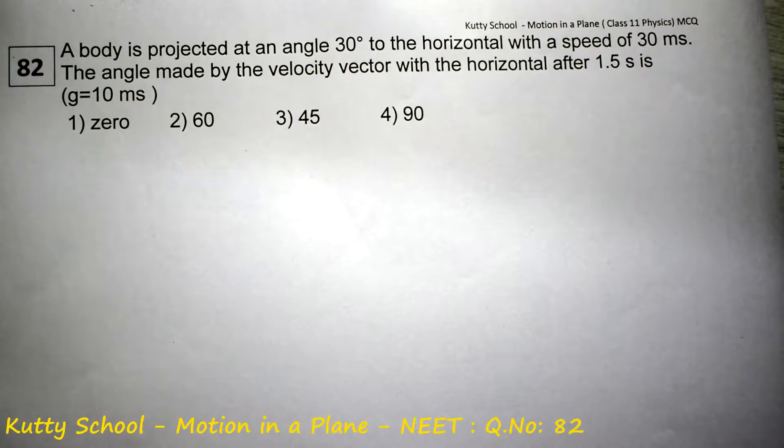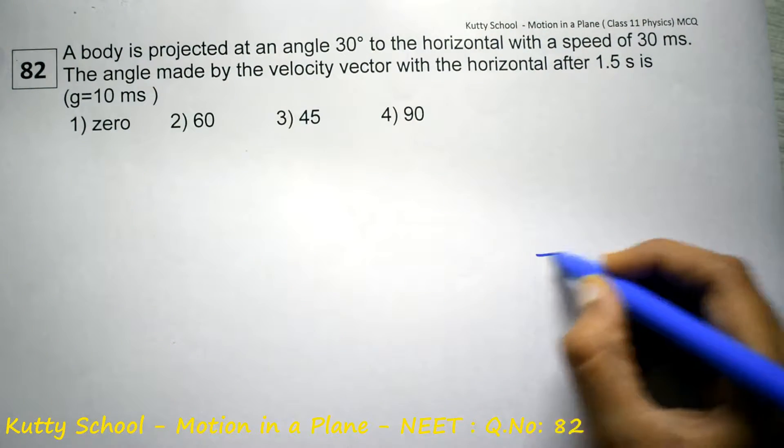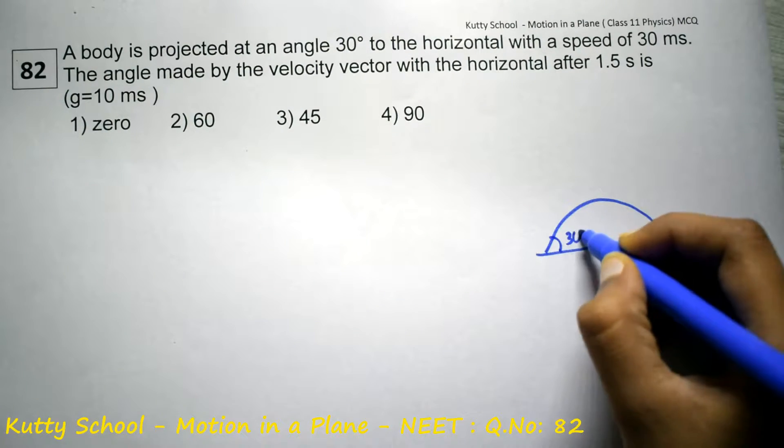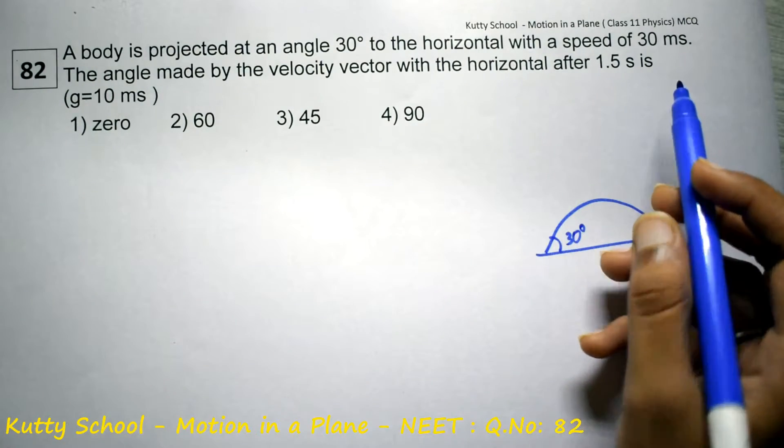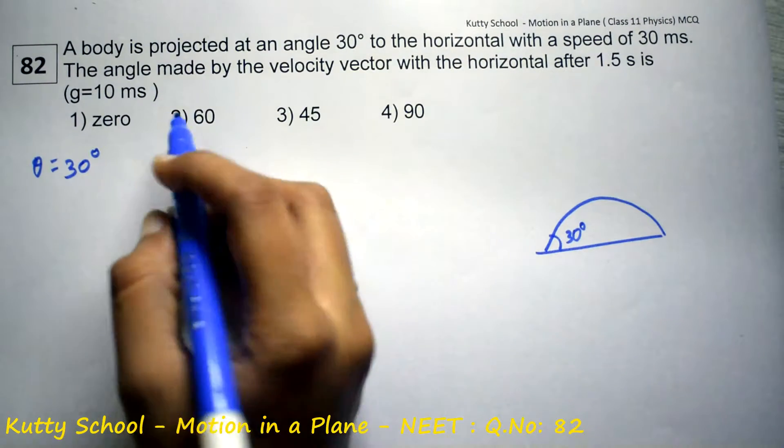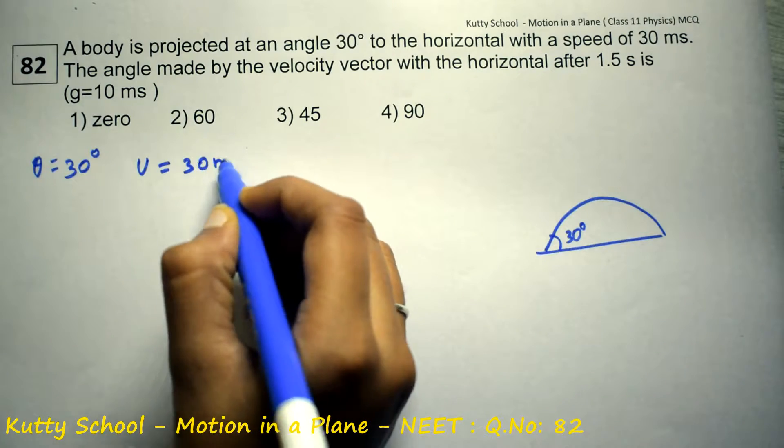A body is projected at an angle of 30 degrees to the horizontal. A body is projected 30 degrees with a speed. So theta is equal to 30 degrees with a speed u is equal to 30 meters per second.